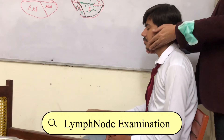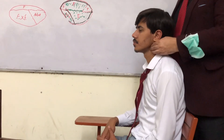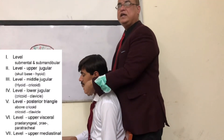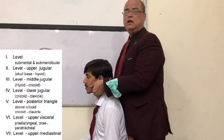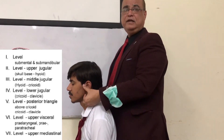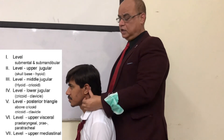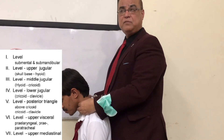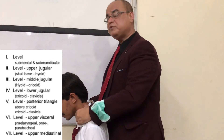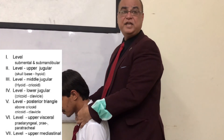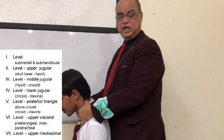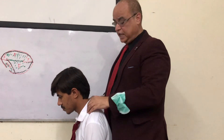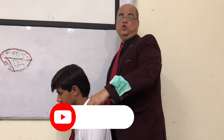Stand behind the patient, go for superficial palpation first, then deep palpation with the pulp of your fingers. Examine: submental, submandibular, upper deep cervical, pre-auricular, post-auricular lymph nodes. Ask the patient to flex the neck along the anterior border of the sternocleidomastoid — middle deep cervical, lower deep cervical. Come to the midline: pre-tracheal and pre-laryngeal lymph nodes. With your thumb, check for suboccipital lymph nodes, and then go for supra-clavicular lymph nodes.